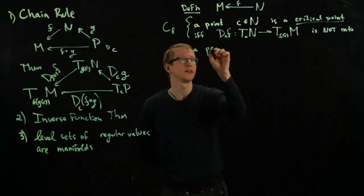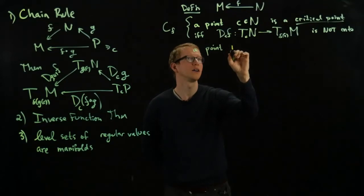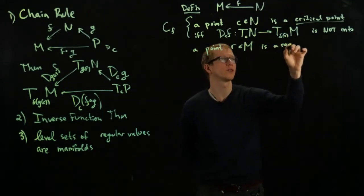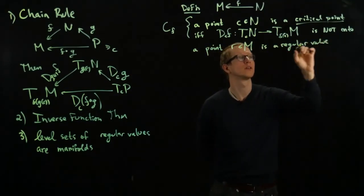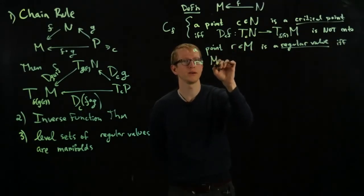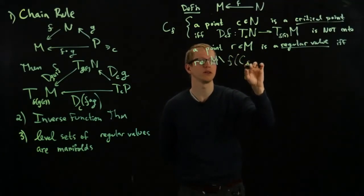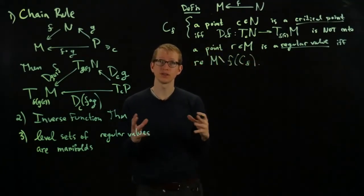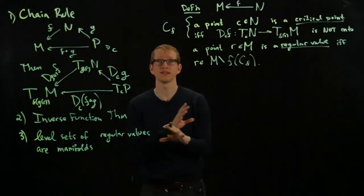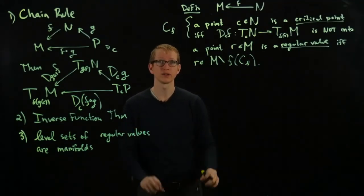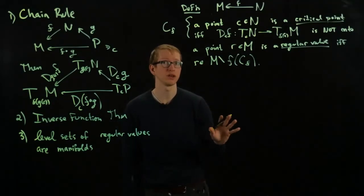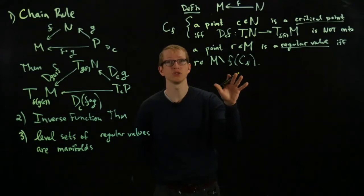A point R in M is a regular value if and only if R is in M minus the image of the critical points of F. So if you look at all the set of critical points and you map them into M, that's going to be a bunch of points in M. Anything that's in M that's not in that image is a regular value. It doesn't matter if it gets hit by the function M at all. It doesn't have to be in the image of F as long as it's not in the image of the critical points.